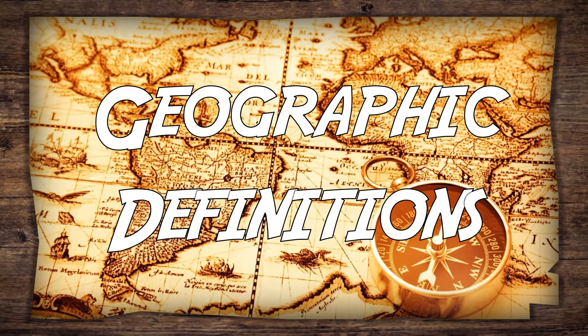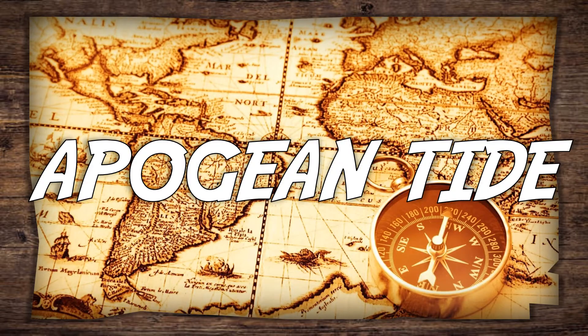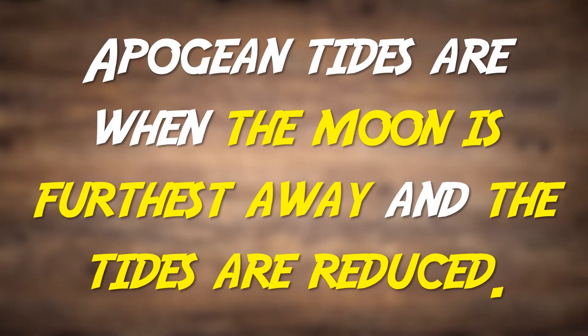Welcome to Geographic Definitions. Today we'll be defining Apogean Tide. Apogean tides are when the moon is furthest away and the tides are reduced.